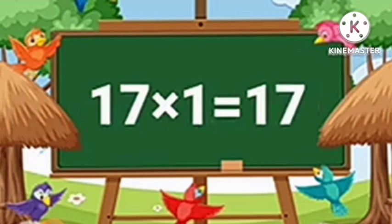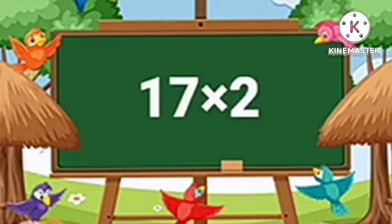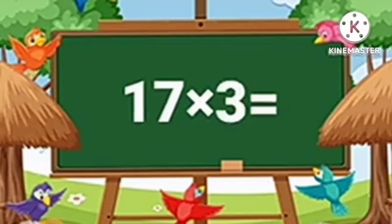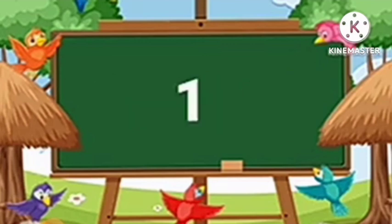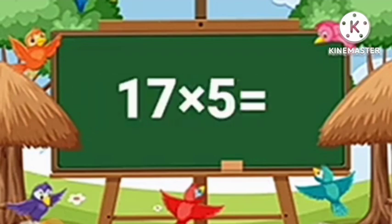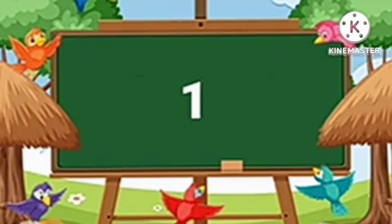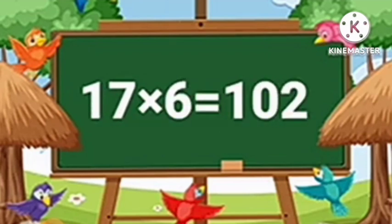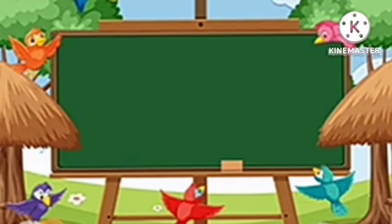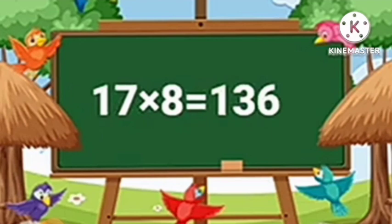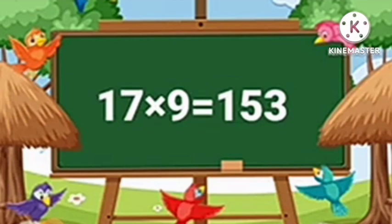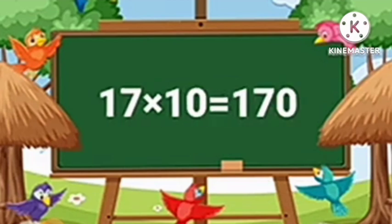Table of Seventeen. Seventeen-One's are Seventeen. Seventeen-Two's are Thirty-Four. Seventeen-Three's are Fifty-One. Seventeen-Four's are Sixty-Eight. Seventeen-Five's are Eighty-Five. Seventeen-Six's are One Hundred and Two. Seventeen-Seven's are One Hundred and Nineteen. Seventeen-Eight's are One Hundred and Thirty-Six. Seventeen-Nine's are One Hundred and Fifty-Three. Seventeen-Ten's are One Hundred and Seventy.